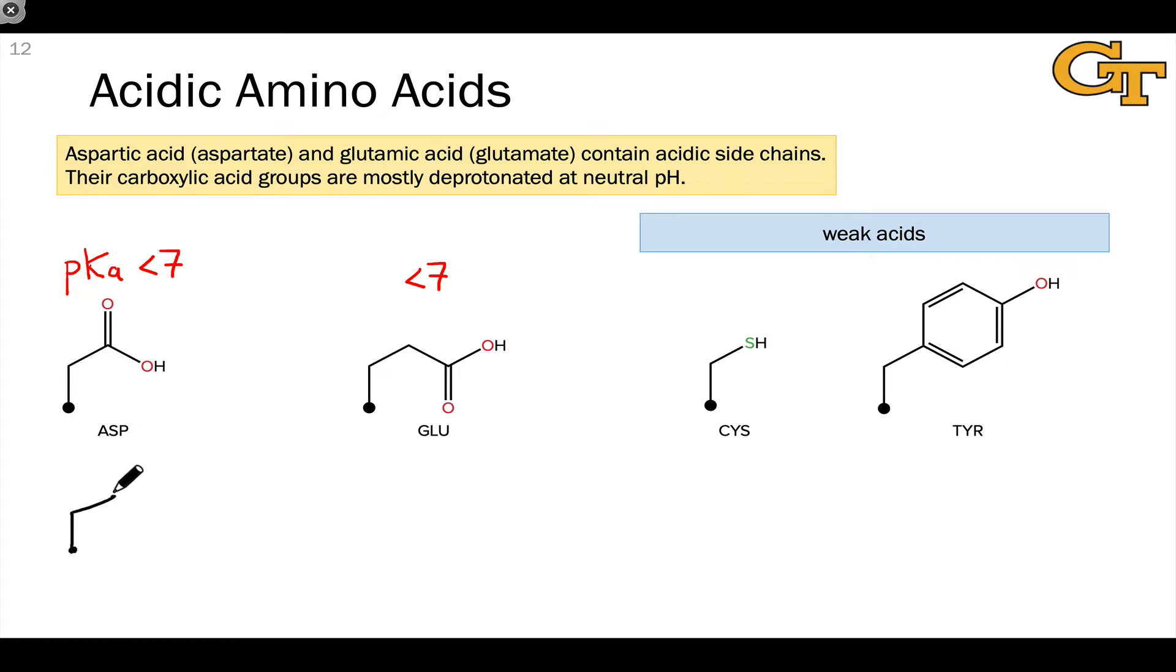In the active site of an enzyme, though, through electrostatic effects that we'll talk about later, we can modulate or adjust the pKa of an aspartic acid or glutamic acid locally. And so you'll see both of these ionization states in enzyme active sites.